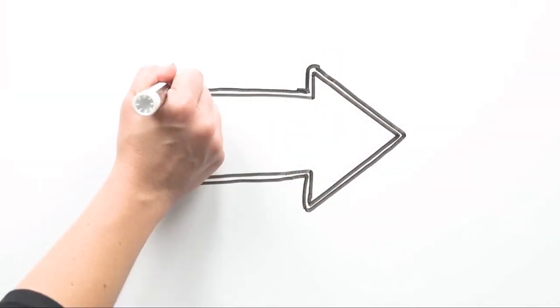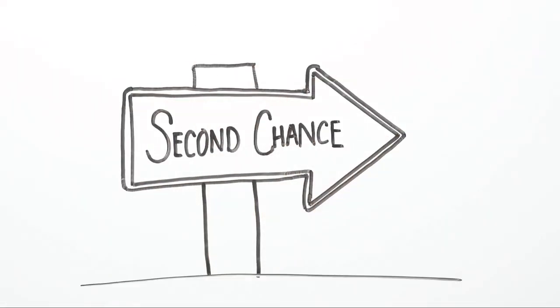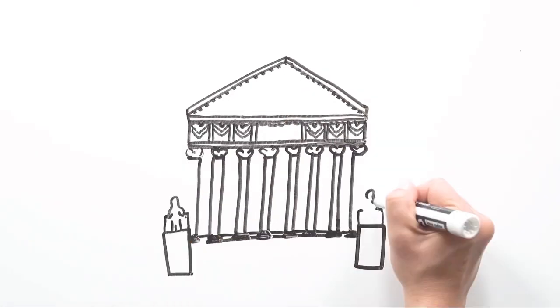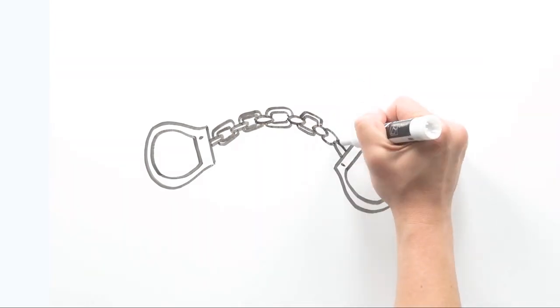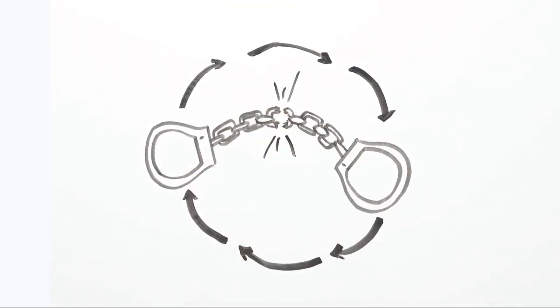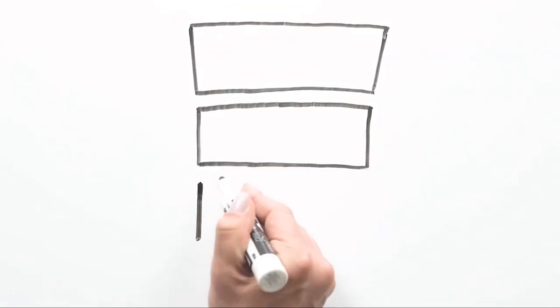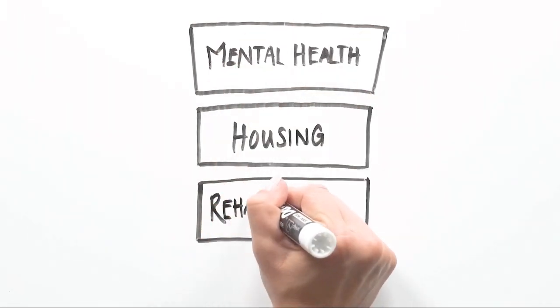As prosecutors, we also have the ability to give people second chances. That's why we work with special courts that steer people away from jail, still hold them accountable, but get them the help they need to break the cycle and stay out of jail. Help like mental health treatment, finding a place to live, or kicking a drug or alcohol addiction.